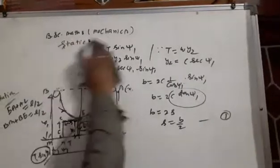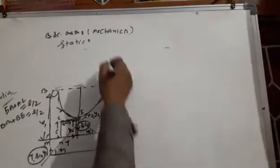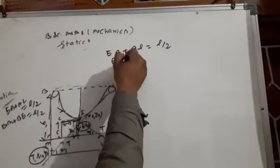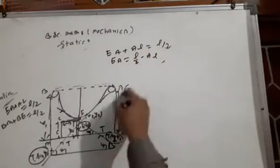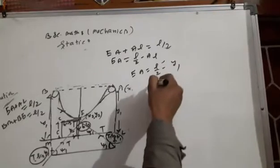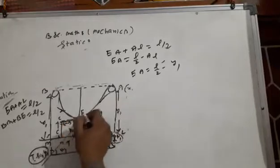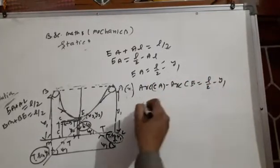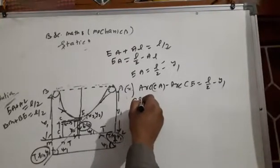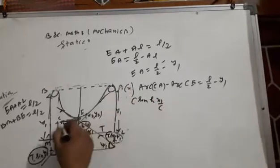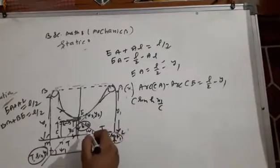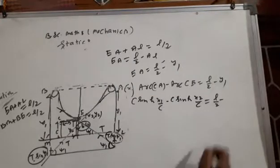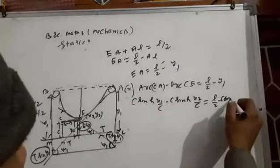Your points are: arc EA plus L. EA plus L equal to L·y2. If y2 equal to L·y2, then a equal to L·y2 minus L equal to y1 and EA equal to L·y2 minus y1. To write it in arc form: arc CA minus arc C equal to L·y2 minus y1. Arc CA equals C·sinh(x1/c), where this is the vertical distance to x1.